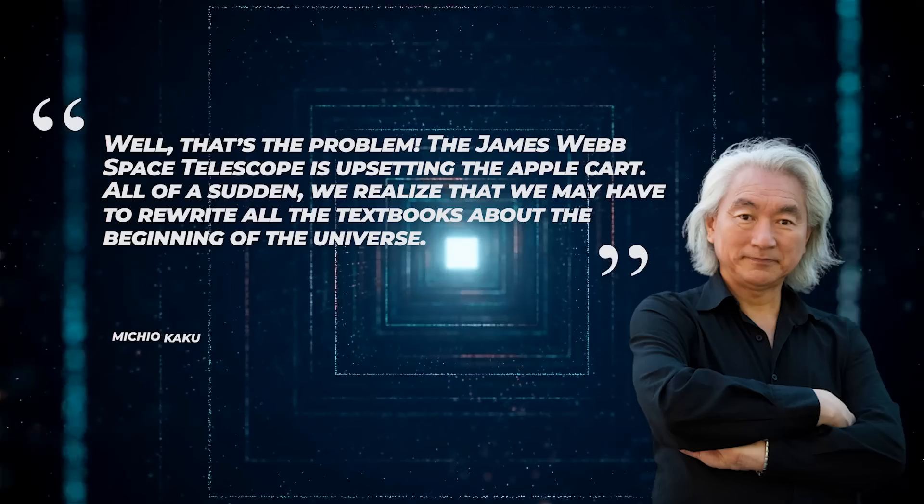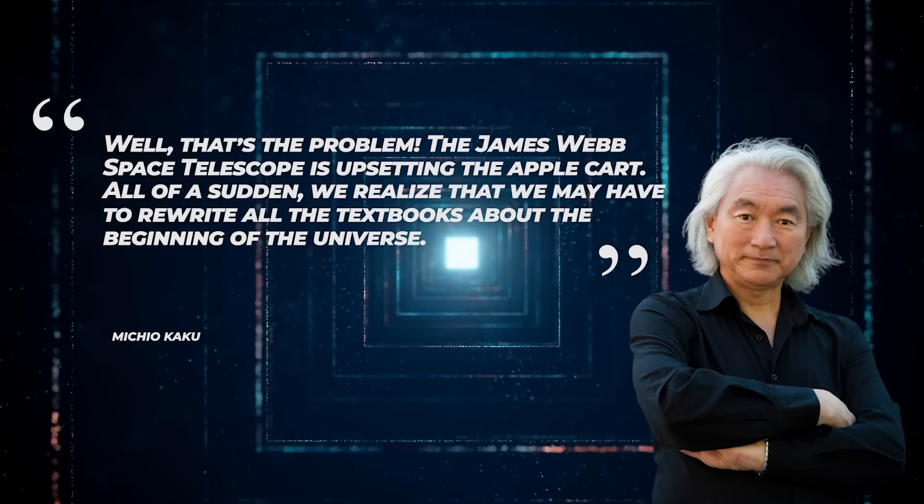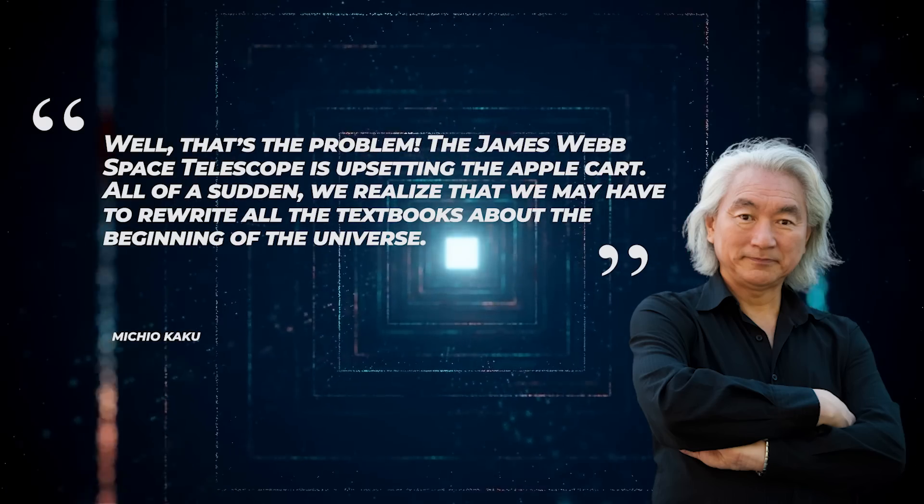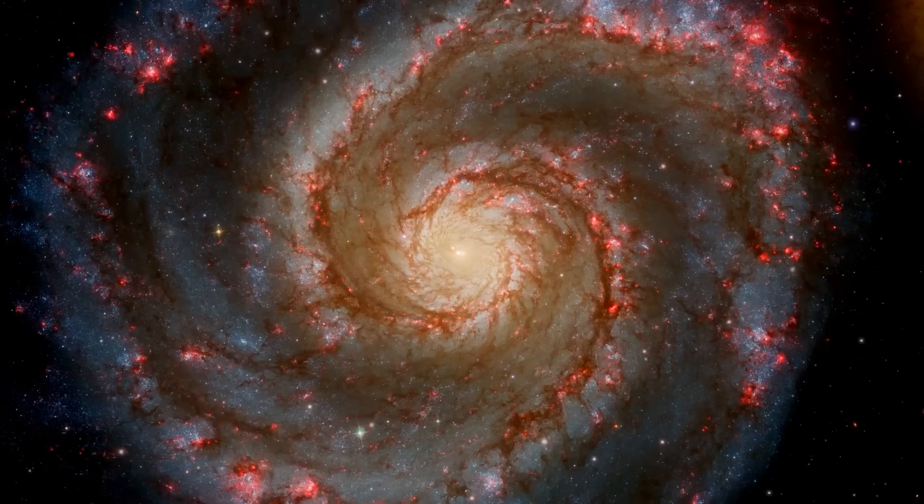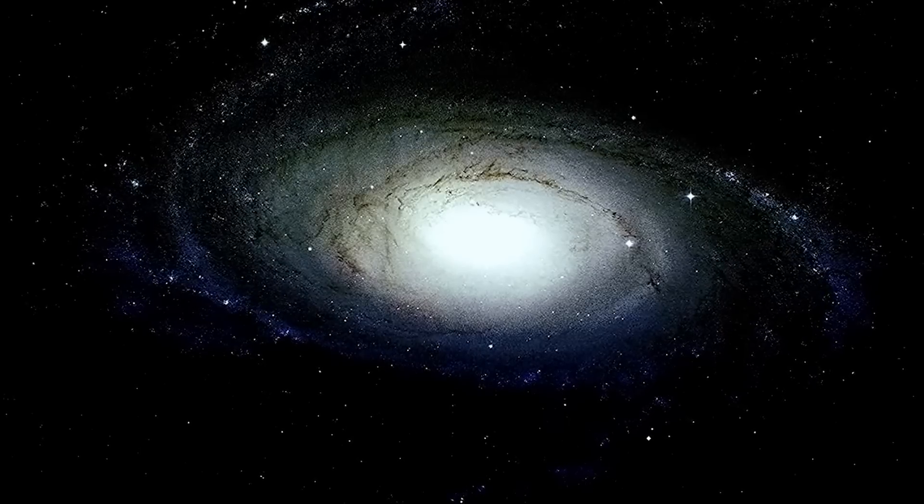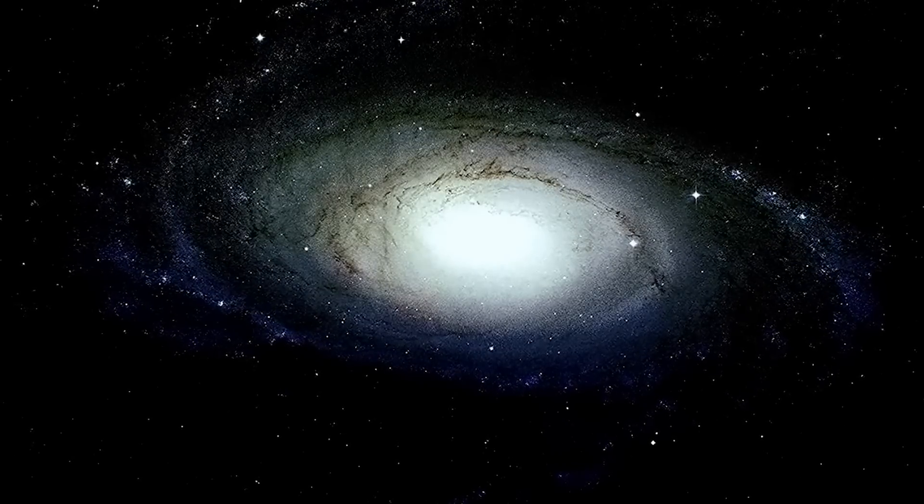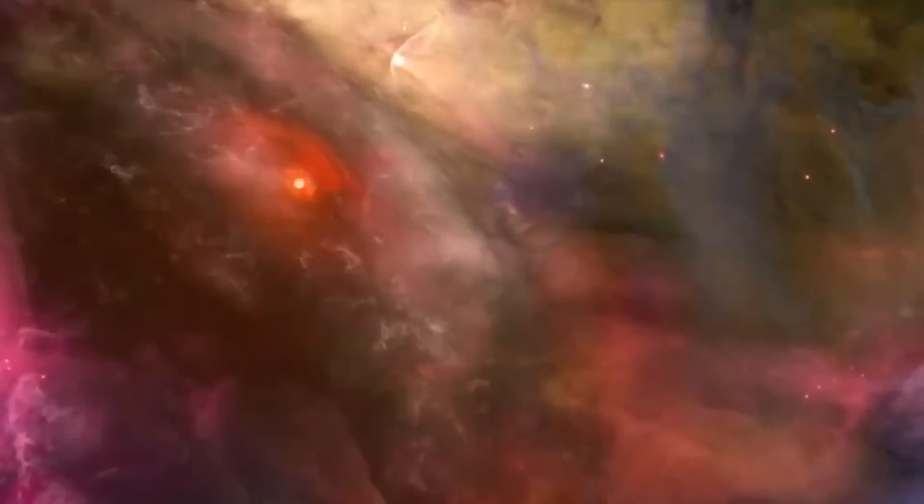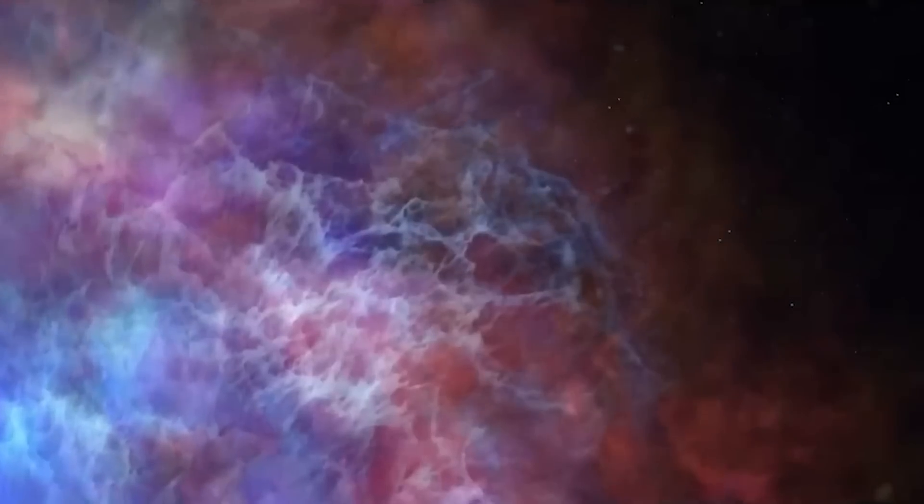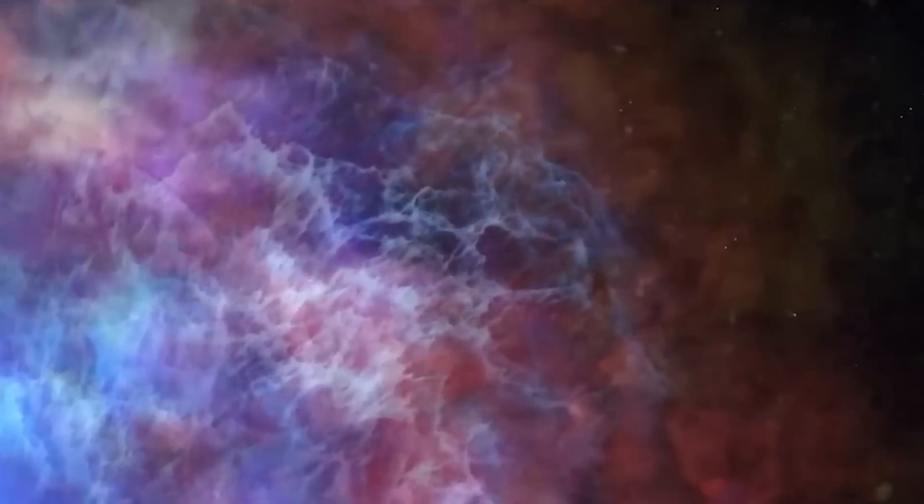As Michio Kaku, the famous American theoretical physicist, put it, well, that's the problem. The James Webb Space Telescope is upsetting the apple cart. All of a sudden, we realize that we have to rewrite all the textbooks about the beginning of the universe. Researchers had previously reported that these galaxies were as developed as our own Milky Way, and a new paper has only confirmed those findings by putting these ancient galaxies to the test. The results suggest that we may be missing essential information about the universe, and if we haven't made a mistake, the implications could be profound.